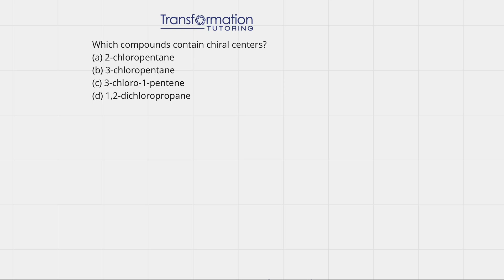Compounds contain chiral centers. A chiral center is an atom that has four different groups, and most of the time the atom is carbon. So basically we are looking for carbons that have four different groups, and if you find them, those are chiral centers.